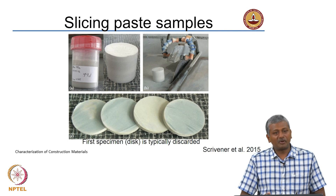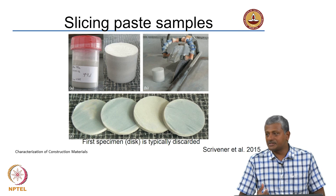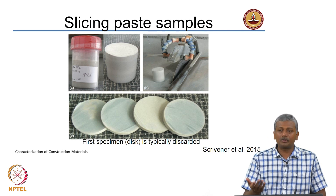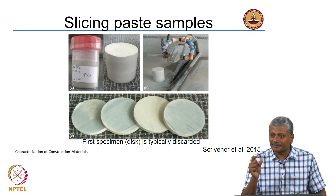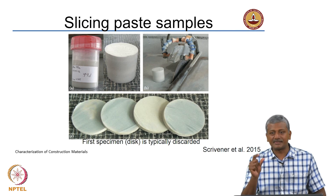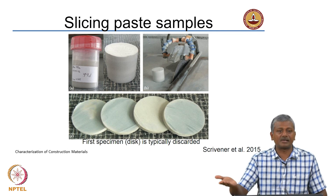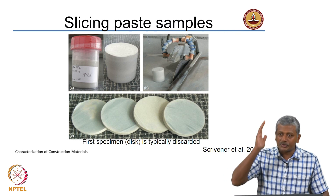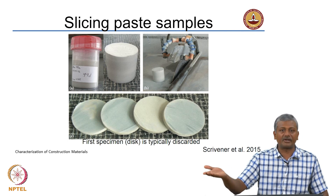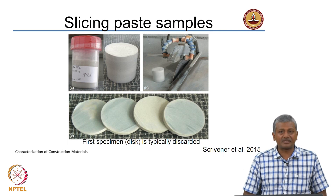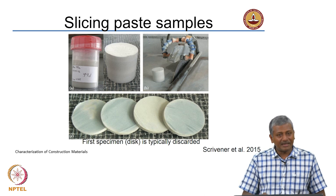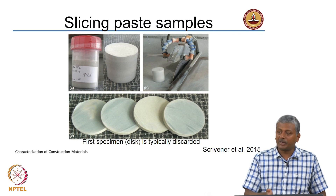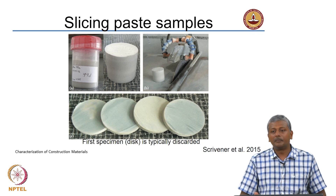In some cases, for example when we have prepared paste specimens, just like you do for X-ray diffraction, you do not always need to powder the specimen. You can use slices of the cement paste and directly image the slices. Similarly, in microscopy also, you can directly take cement paste slices, simply cut them off and use them for microscopy.